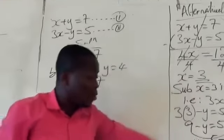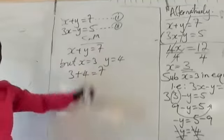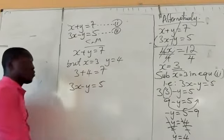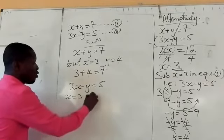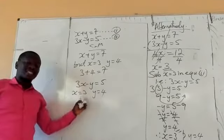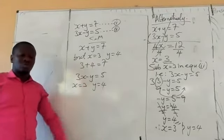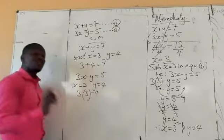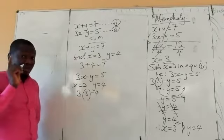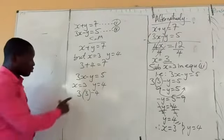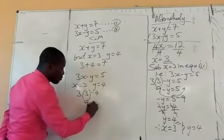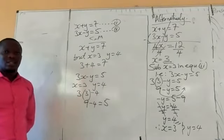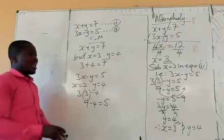Now let's verify equation 2. We have 3x minus y equals 5, with x equals 3 and y equals 4. Substituting: 3 times 3 minus 4 equals 9 minus 4, which equals 5. So the values x equals 3 and y equals 4 satisfy both equations. That's the elimination method.